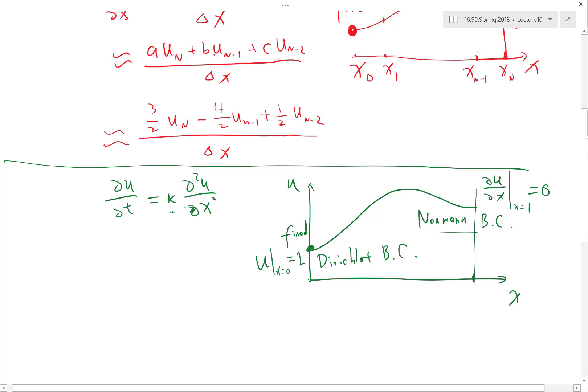So for 3D, what you have is grad U dot with the surface normal is equal to zero. That's typically what it means by a zero Neumann boundary condition in multiple dimensions. Okay, any questions on these?